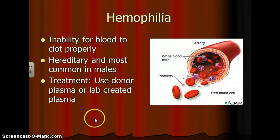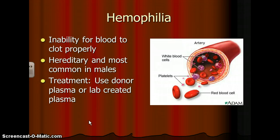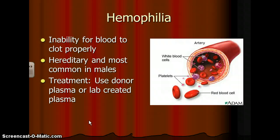Hemophilia is another blood disease — it is the inability for blood to clot properly. This is a hereditary disease and is most common in males; we discussed this during the genetics unit. Treatment for hemophilia is to use donor-created plasma or lab-created plasma.